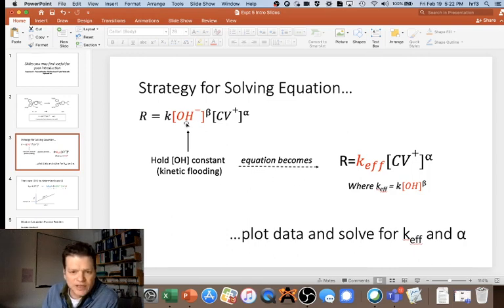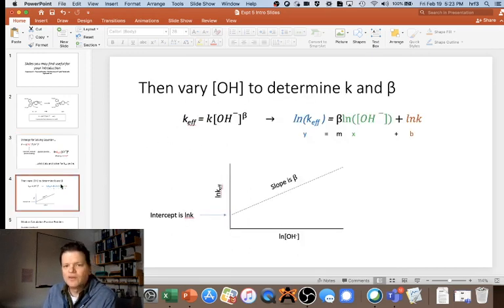That's for a particular flooded value of hydroxide, but how do we figure out beta? We can run a second run where we still have flooded hydroxide, but a different value—maybe we'll cut it in half.